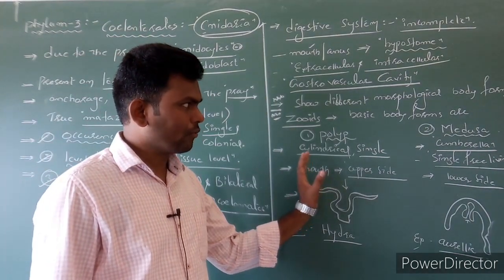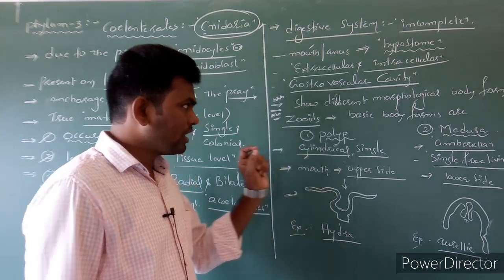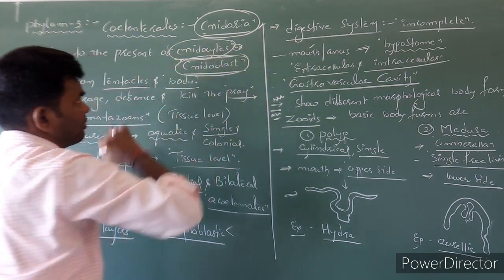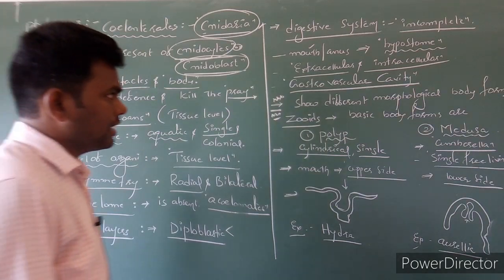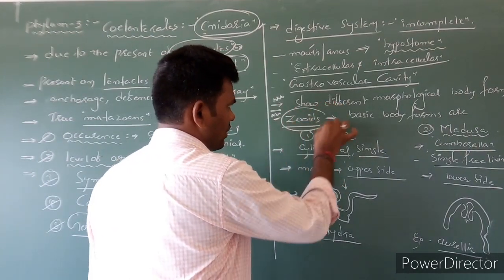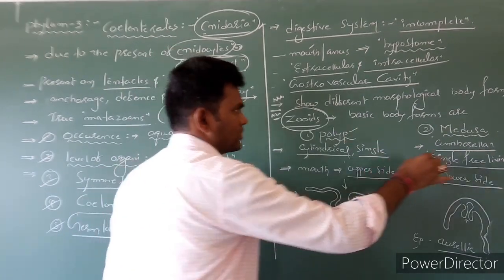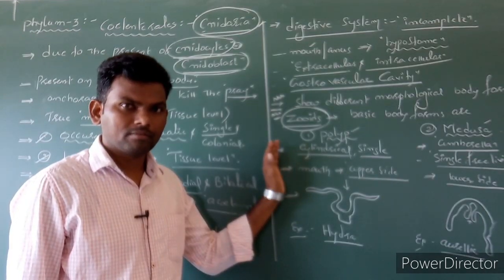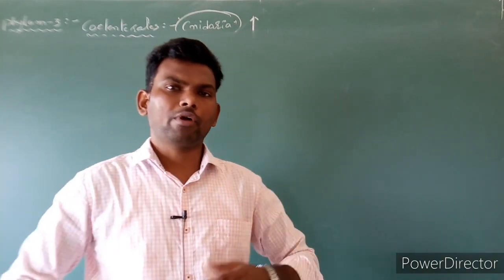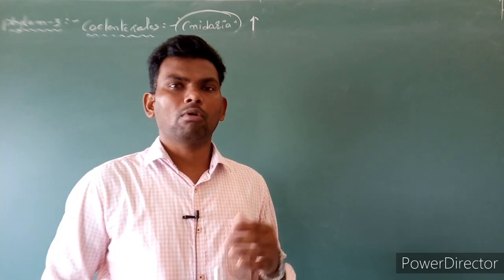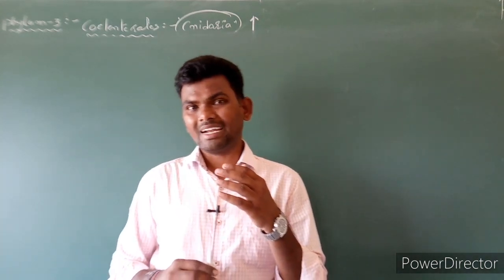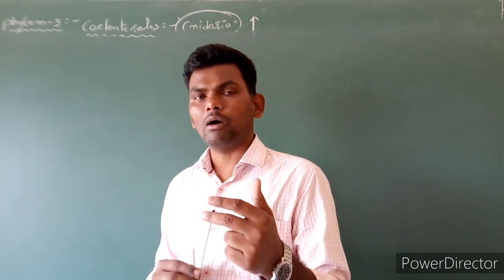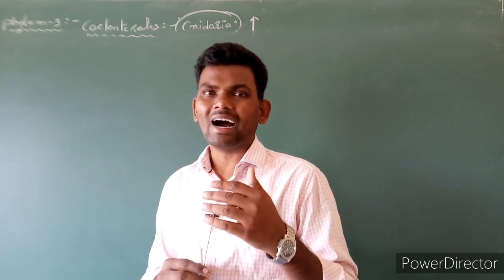This is a basic body forms summary of the cnidaria member — that is, coelenterates. What is the special unique character of cnidaria? First one is cnidoblasts or cnidocytes. Second is that body forms are two different body forms, which is called zooids — first is polyp and second is medusa. Some cnidaria members can perform more than one body form; such members are called polymorphic in nature.